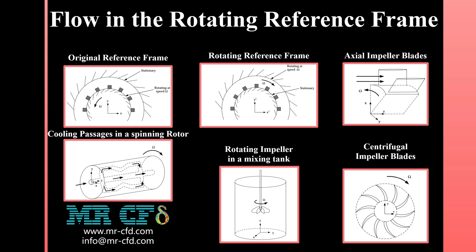The acceleration of the coordinate system is included in the equations of motion describing the flow. A common example of an accelerating reference frame in engineering applications is flow in rotating equipment. Many such flows can be modeled in a coordinate system moving with the rotating equipment, experiencing a constant acceleration in the radial direction. This class of rotating flows can be treated using the rotating reference frame capability in Fluent.